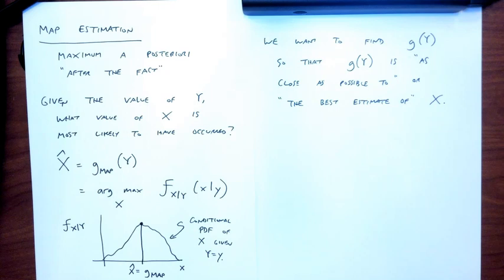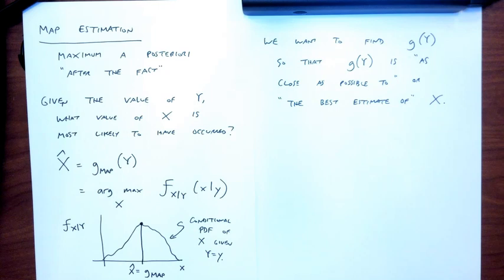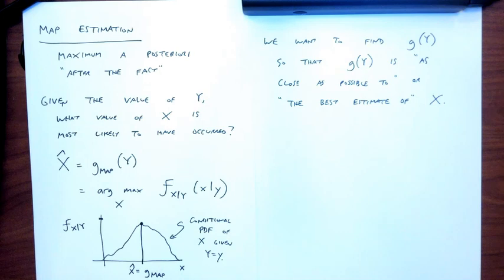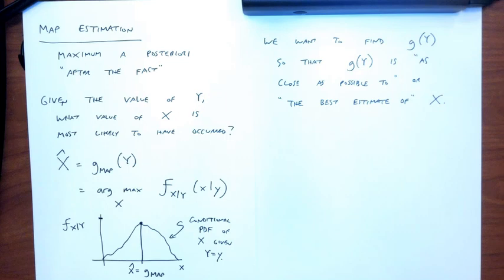A student asks about the notation. 'Arg max' means the x that maximizes the expression — not the maximum value itself. So if I just had 'max,' the maximum value would be on the y-axis. With 'arg max,' I'm asking: what is the x-value on the x-axis that corresponds to the maximum? I don't care about the actual maximum value; I care about the x where it happened.